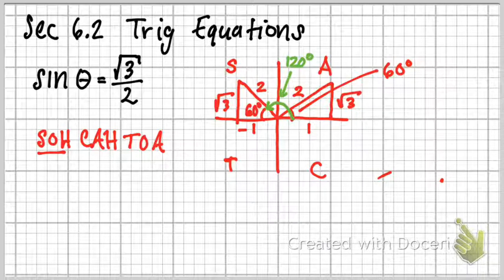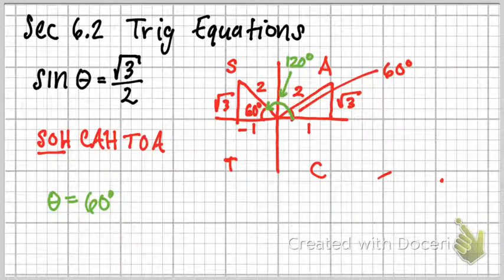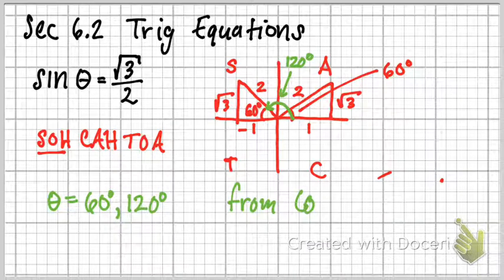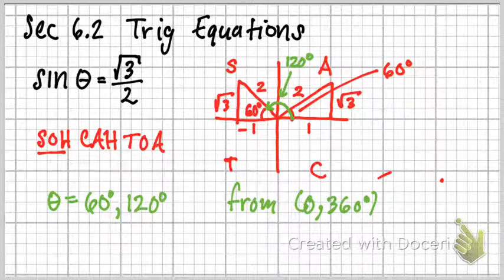So therefore, if I'm looking for the answer for this equation here, I could simply say from this picture that theta equals 60 degrees, or could equal 120 degrees. So those would be my two answers, assuming that the directions were from 0 to 360 degrees. Now, a lot of times what they might do is say, what is the answer if it's for all of them? And we'll talk about that later.